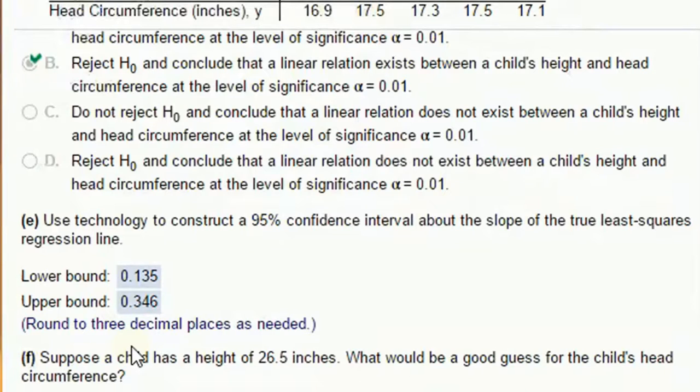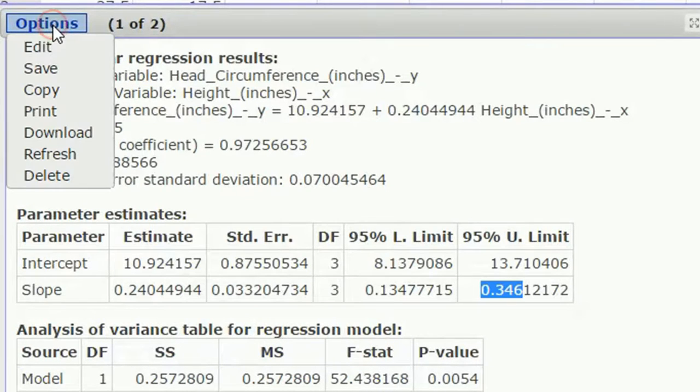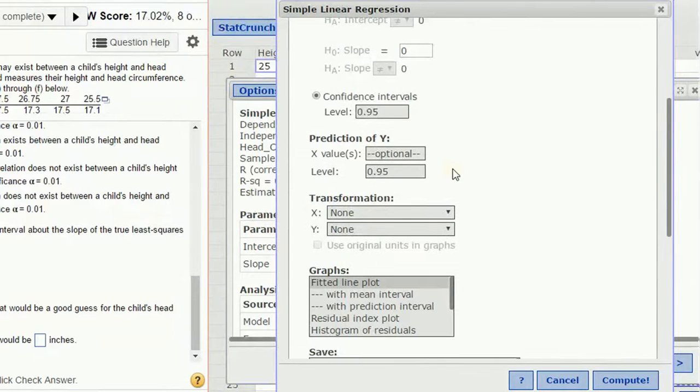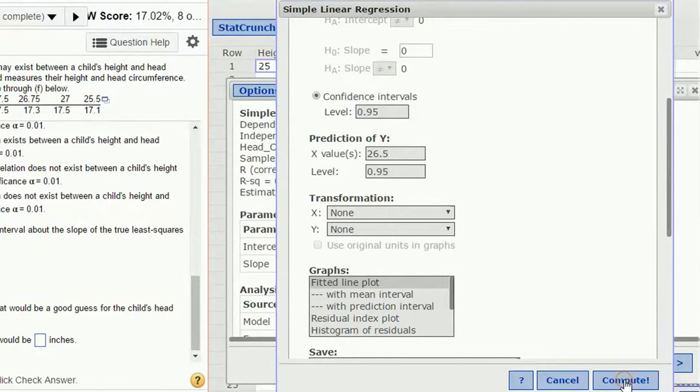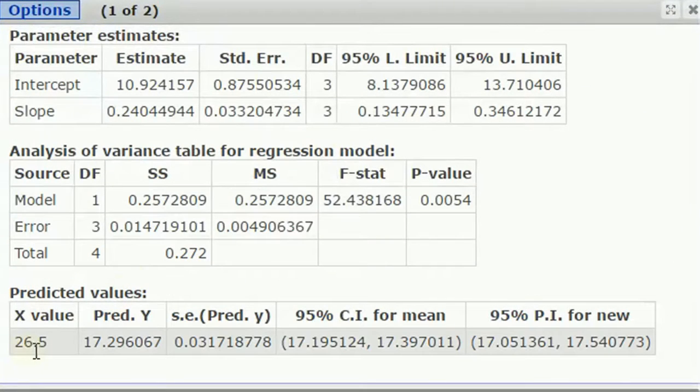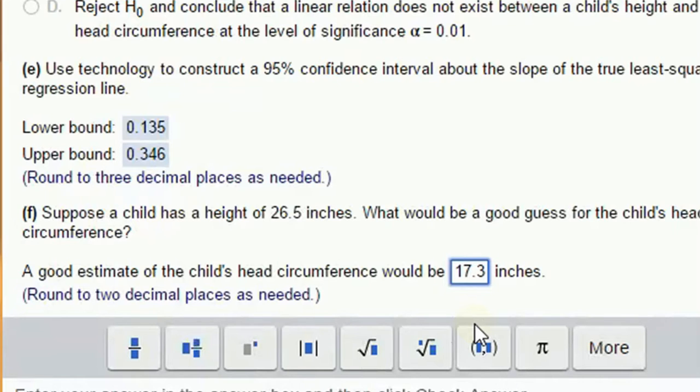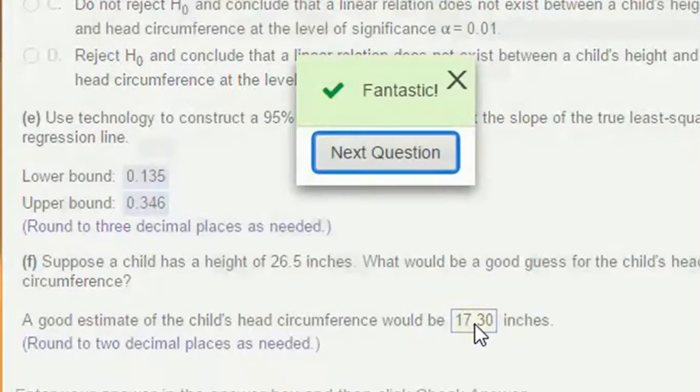Okay. Great. Suppose the child has a height of 26.5. What would a good guess for the child's head circumference be? We're going to use our model to predict. And to do that, we go to options and edit. We can scroll down a little bit. And here we have prediction of Y. You can plug in a value for X. This is a height of 26.5. And we're going to just click compute. And it's going to, in addition to all the other output now, it's going to give us, if you scroll down, predicted value. For the predicted value for X value of 26.5, we had a predicted Y of 17.296. Two decimal places. 17.29, that rounds up to 17.3, 17.30. Not necessary, but for good measure, let's type it in. Great.